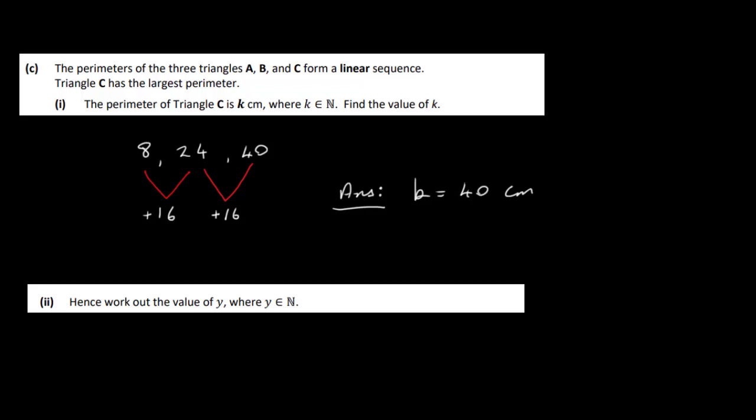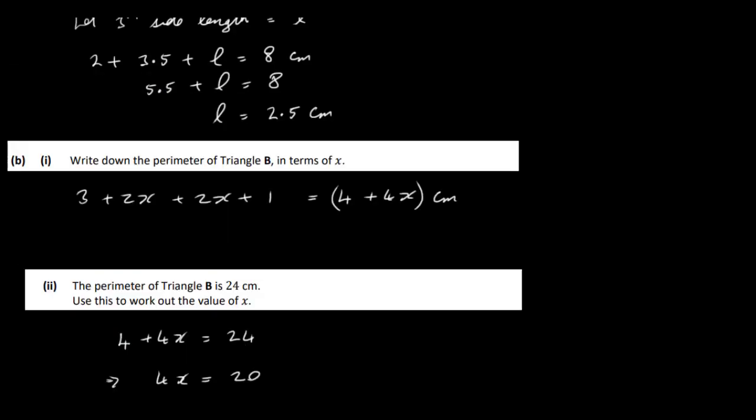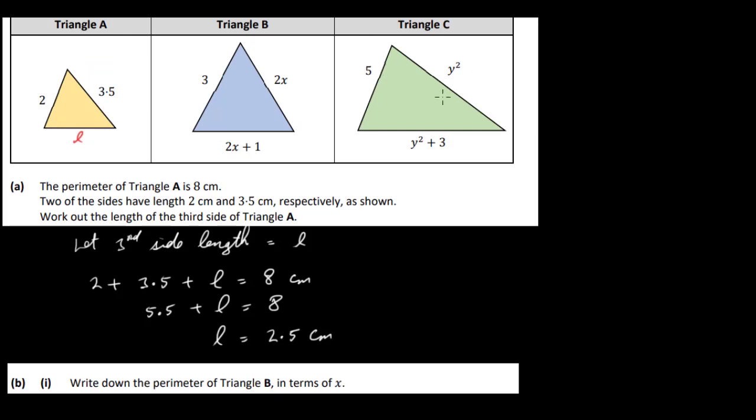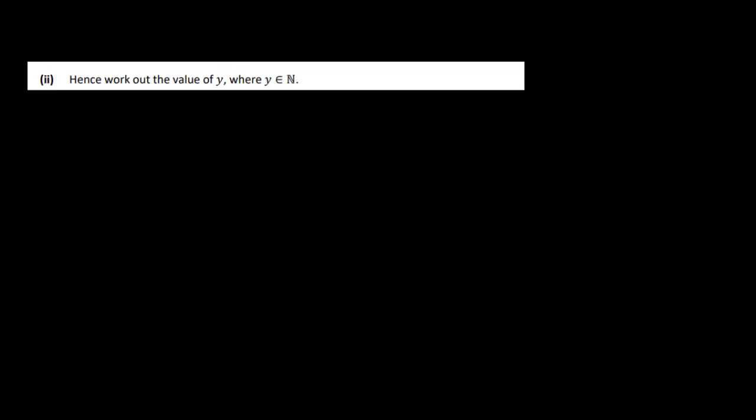Hence work out the value of y, where y is an element of N. So y is what we get when we add up the three sides: 5 plus y squared plus y squared plus 3. That equals 40, the perimeter we got, the value of k from the previous part of the question.